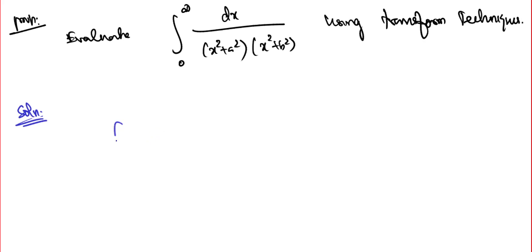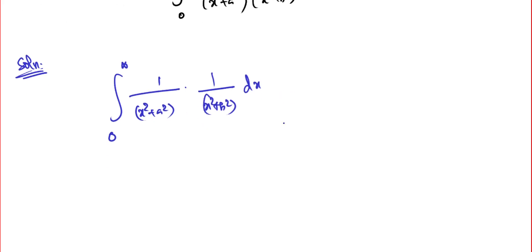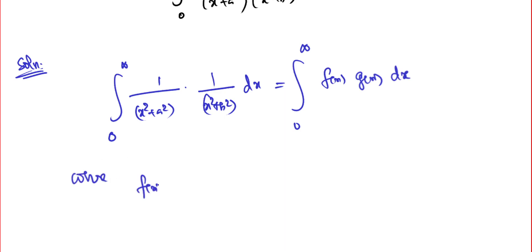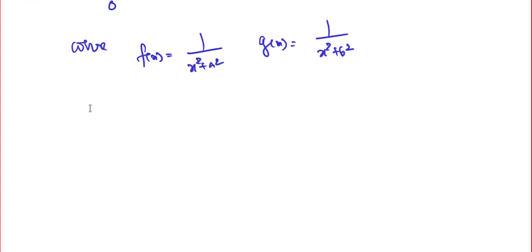The solution is straightforward. I want to look at this problem as the integral from 0 to infinity of [1/(x² + a²)] times [1/(x² + b²)] dx, and write this as the integral of f(x) times g(x) dx, where f(x) = 1/(x² + a²) and g(x) = 1/(x² + b²).